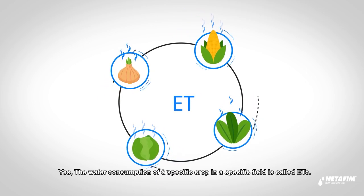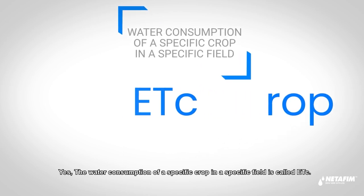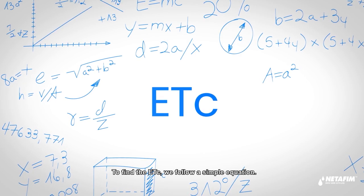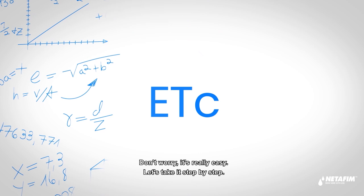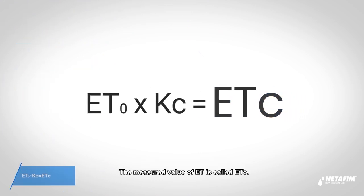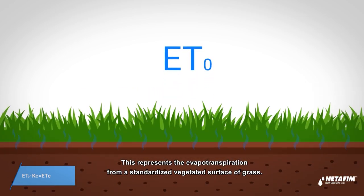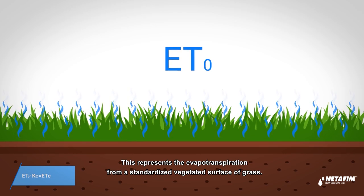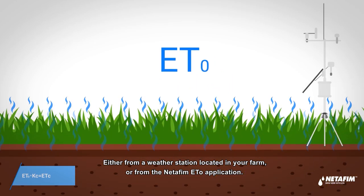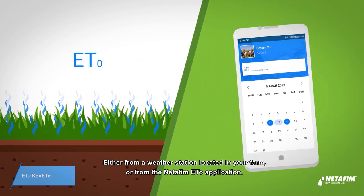Every plant will transpire a different amount of water, so the water consumption of a specific crop in a specific field is called ETc. To find the ETc, we follow a simple equation. The measured reference value of ET is called ETo — this represents the evapotranspiration from a standardized vegetated surface of grass. You can get ETo values from a weather station located on your farm, or from the FAO ETо application.